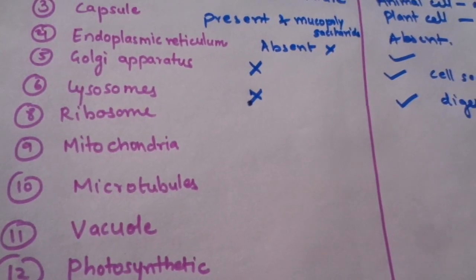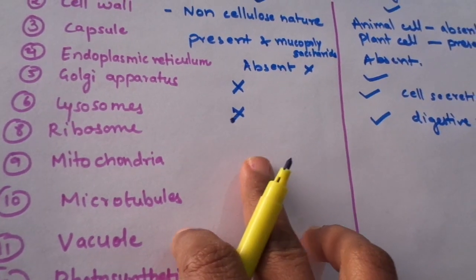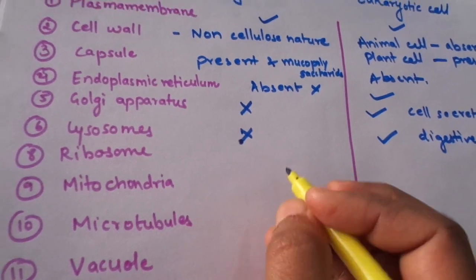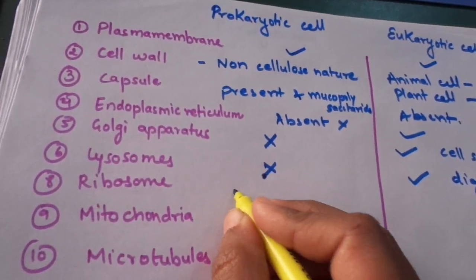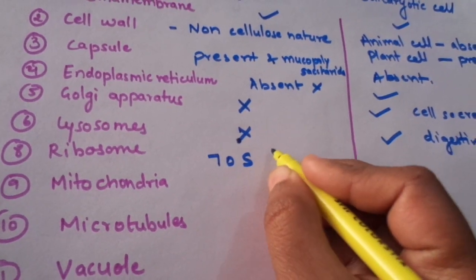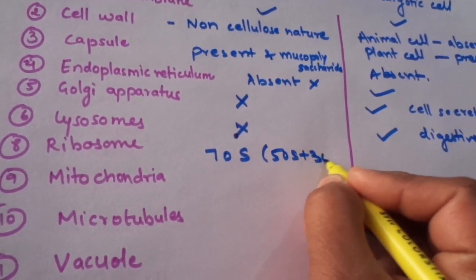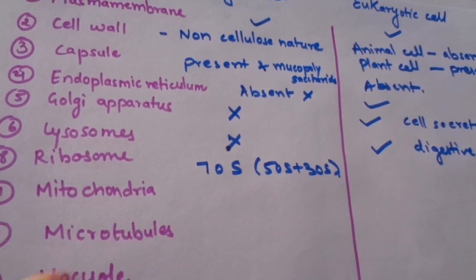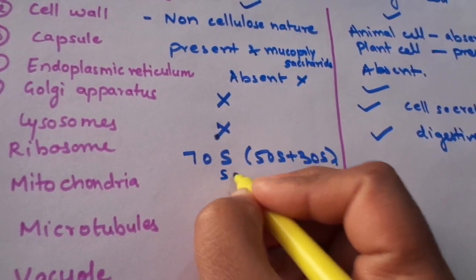The next difference between the prokaryotic cell and the eukaryotic cell is the ribosome. Ribosomes are present in both cases. But in the case of prokaryotic cells, they are 70S — that is 50S plus 30S — and they are randomly scattered in the cytoplasm.